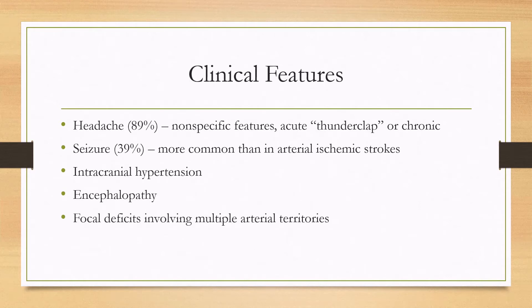In terms of clinical features, the most common one is headache, which presents in almost 90% of patients. Unfortunately, the headache is fairly nonspecific — it can be an acute presentation such as a thunderclap headache, or it can be more chronic. Seizures are more common in these venous thromboses than in arterial ischemic strokes, and present in about 2 out of 5 patients.